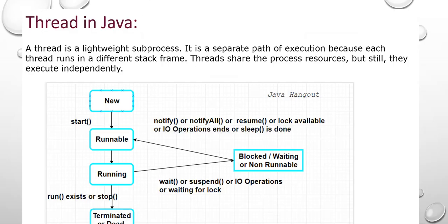We will see the definition. Thread is a lightweight sub-process. It is a separate path of execution because each thread runs in a different stack frame — that is the beauty of Thread. Threads share the process resources but still they execute independently.